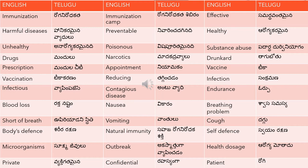Vaccine is 'tika'. Similarly, vaccination means 'tika karana'. Reducing is 'taggin sandi' — for example, you will have to keep reducing your intake of alcohol. Reducing can also be 'taggin sali' depending on the tense of the dialogue.